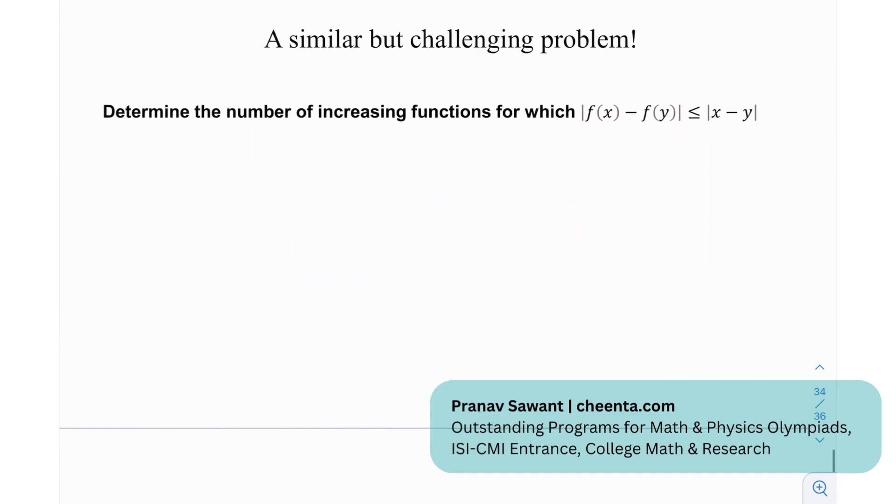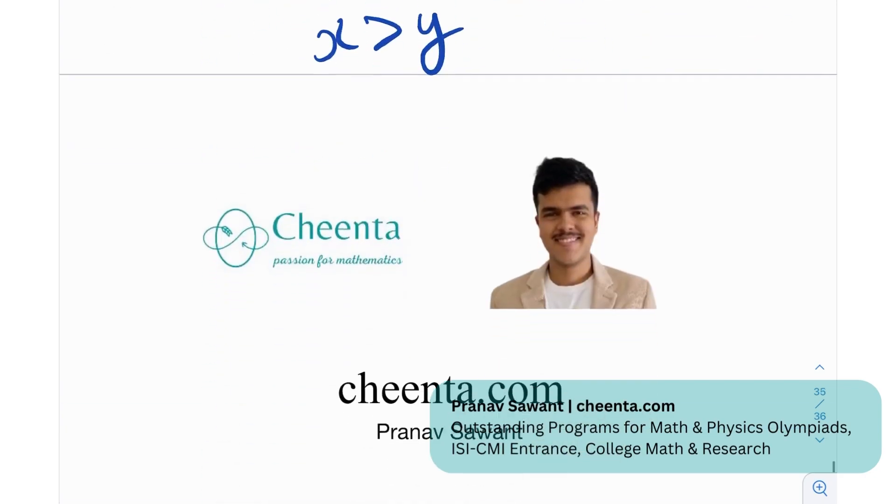Okay, so we have a similar but challenging problem. And in this I want you to determine the number of increasing functions for which modulus of f(x) minus f(y) is less than or equal to x minus y, mod of x minus y. An increasing function is a function which is obviously always increasing, so if f(x) is greater than f(y), then that necessarily means that x is greater than y. So determine the number of such functions for which this condition essentially holds. And yes, if you're able to make any progress on it, if you're able to solve it, let me know in the comment section. Until then, I'll see you in the next video. Thank you very much and bye-bye.